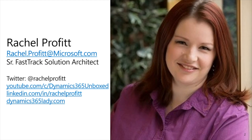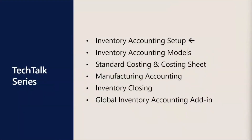We're going to dive in and take a quick look at what our series includes. This is the first in a series of six tech talks diving into the details of inventory costing in Dynamics 365 Supply Chain Management. In this first talk, we focus on key setups and configurations that control costing behavior. The second talk covers costing methodologies. Standard costing gets its own talk, which also covers the costing sheet. Part four covers production costing, part five covers inventory closing and adjustment, and we wrap up with the new Global Inventory Accounting add-in.